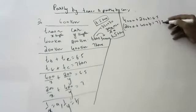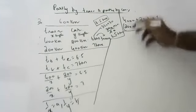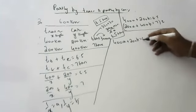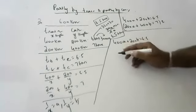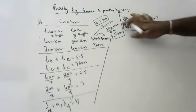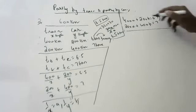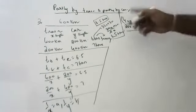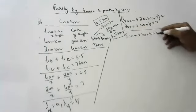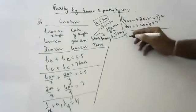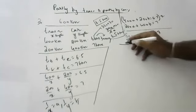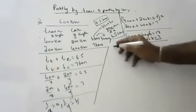Multiply the first equation by 2 to eliminate decimals: 800A plus 400B equals 13. The second equation stays: 200A plus 400B equals 7. Subtracting the second from the first: 600A equals 6, so A equals 6/600, which is 1/100.